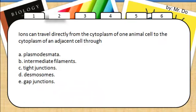Number 2. Ions can travel directly from the cytoplasm of one animal cell to the cytoplasm of an adjacent cell through what? That would be E. Gap junction, which is similar to plasmodesmata found in plant cells.